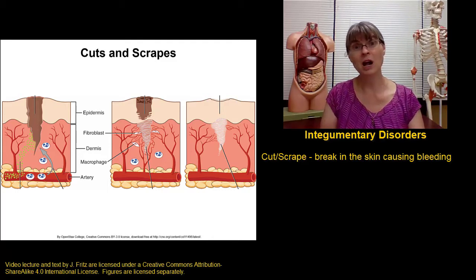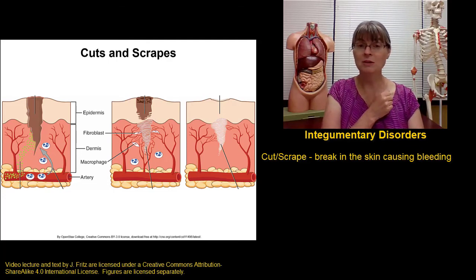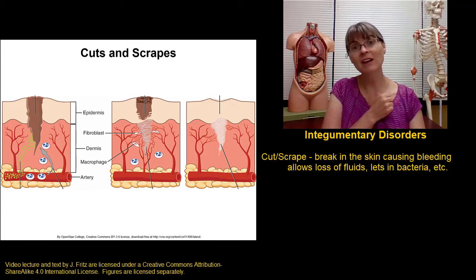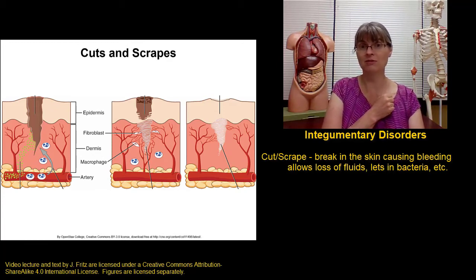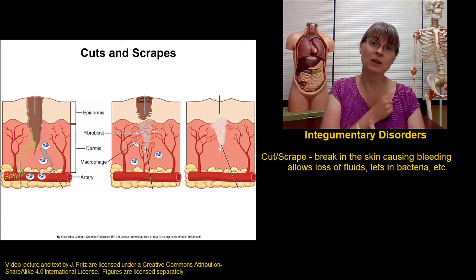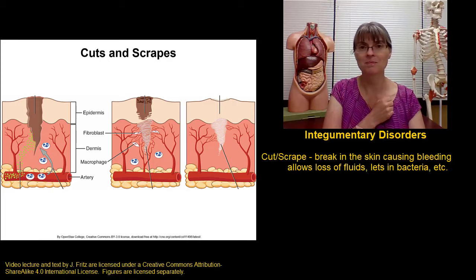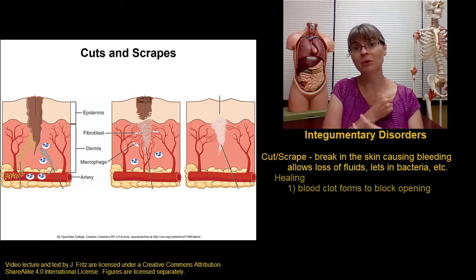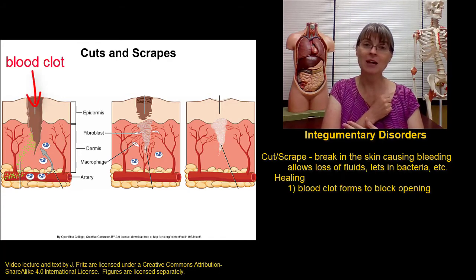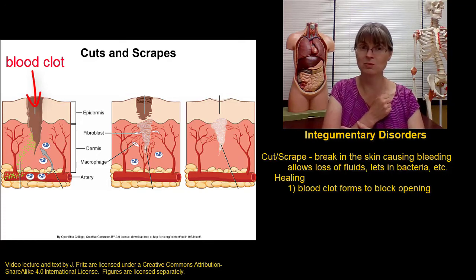There are a couple of problems with this. First, we're losing blood through bleeding, and second, we have an opening in the skin, which prevents it from carrying out the functions it needs to carry out. It's an opening for infection, because we're not protected against that anymore, and it's an opening through which we can lose body fluids. The first thing that happens in the healing process is that a blood clot forms. That's important to block the opening and prevent further blood loss, or to prevent more things from getting in that shouldn't be in.